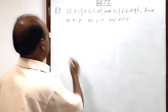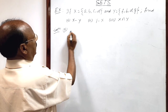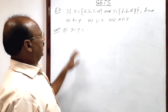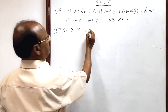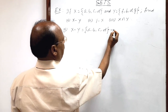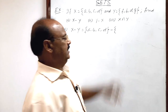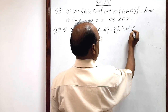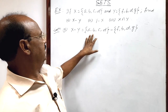Let us solve this, starting with question number one — we have to find X minus Y. Let us write both sets completely: set X has elements a, b, c, d, and set Y has elements f, b, d, g. Now, how will we subtract set Y from set X?